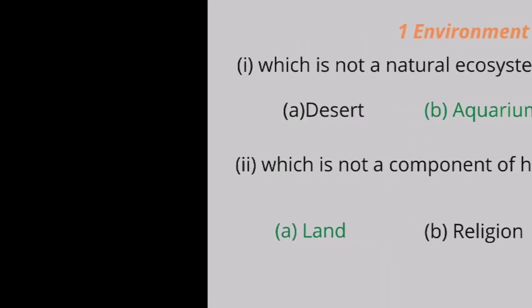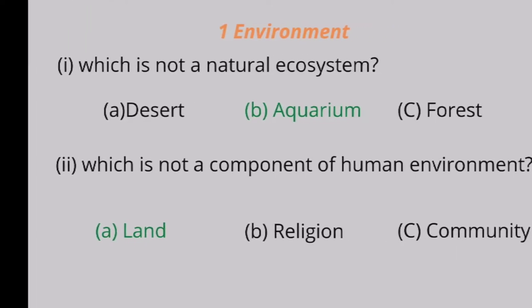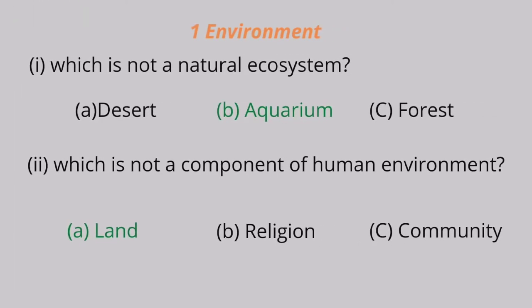Chapter 1: Environment. Question 1: Which is not a natural ecosystem? A. Desert, B. Aquarium, C. Forest. Aquarium is the correct answer.